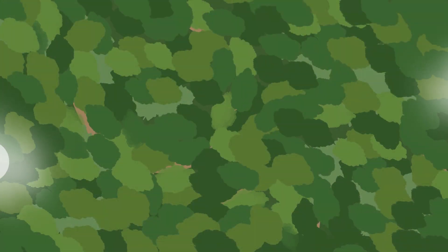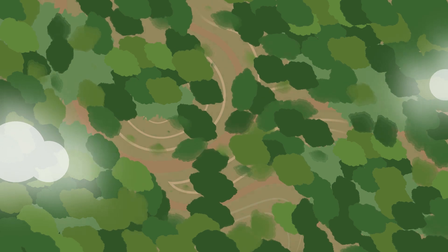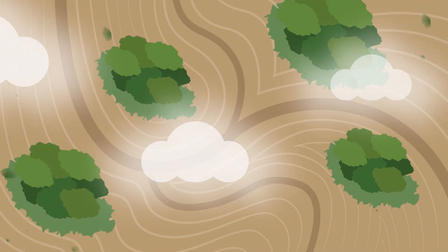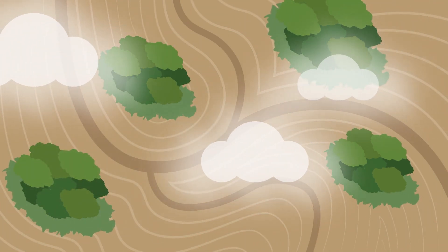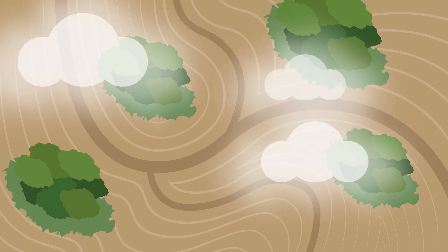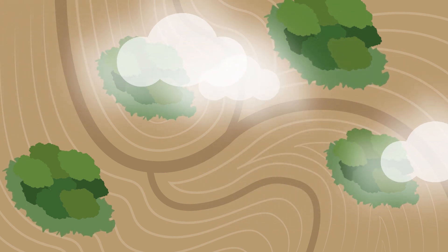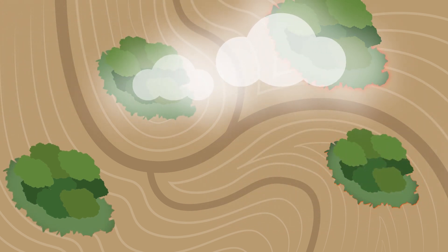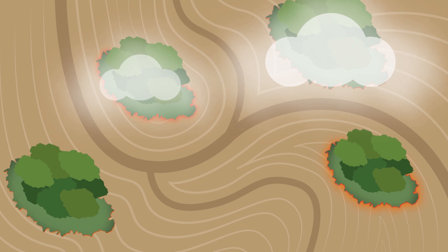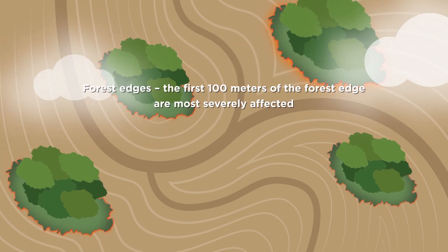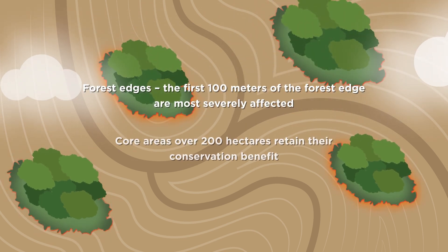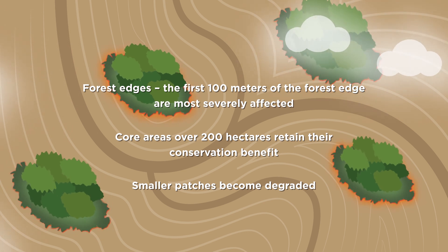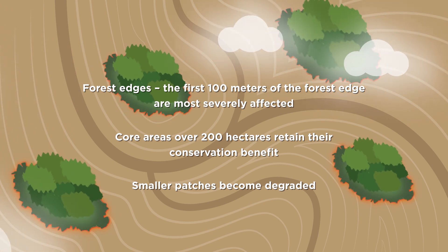The size and shape of forests are important. Human activity fragments forest, creating small patches. Fragmented forests suffer from edge effects. Forest edges are hotter, drier and vulnerable to disturbance. The smaller the patch, the more prone to degradation.